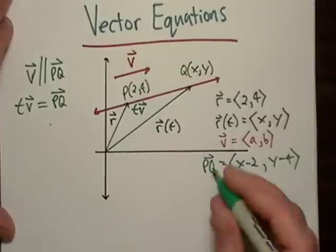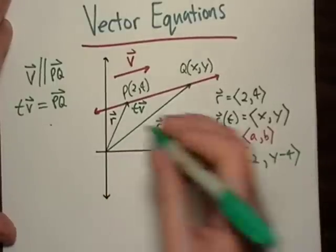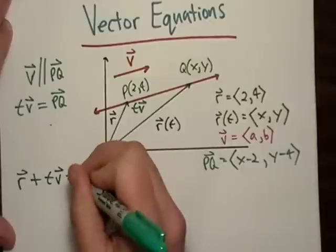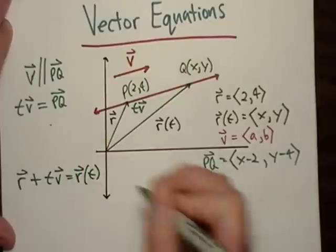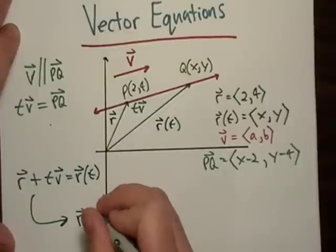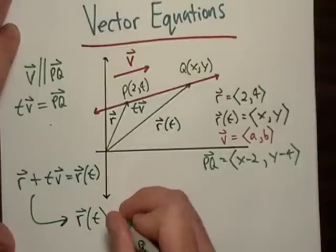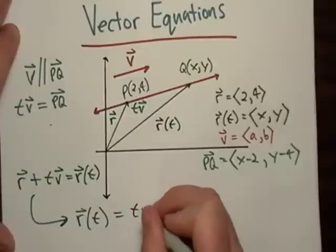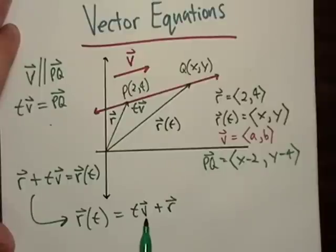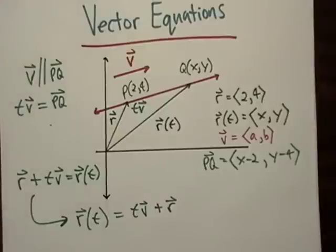If we take R plus TV, we get R plus TV, we end up with R prime of T, right? And if we go a little further here, just rearrange it, it starts to take on the look of a real function. So I've got a variable here, I've got a constant and a variable, then I've got like a constant out here. So it looks a lot like just the equation of a regular line.